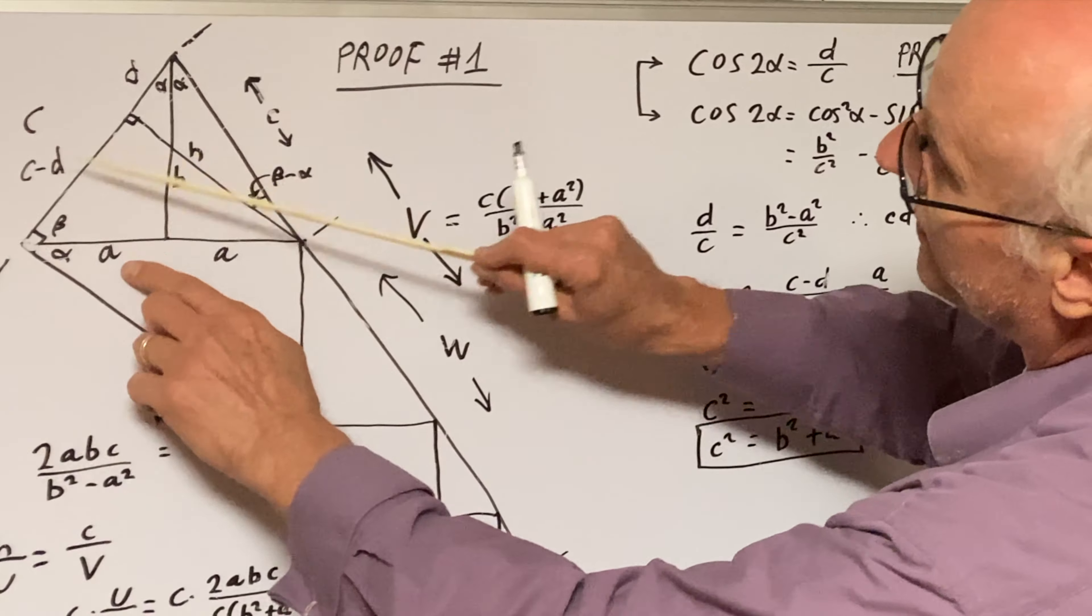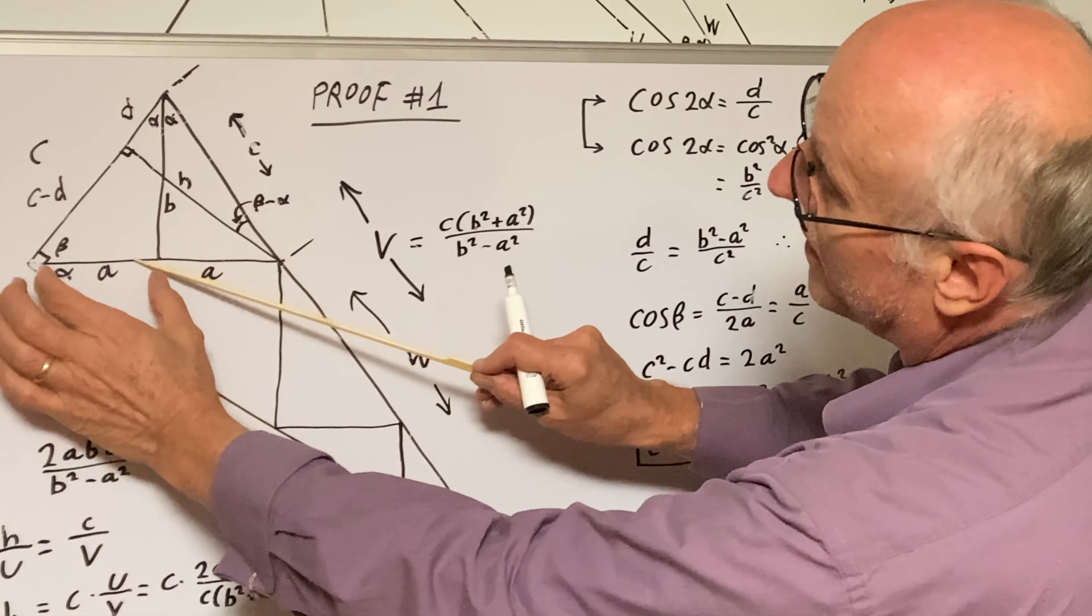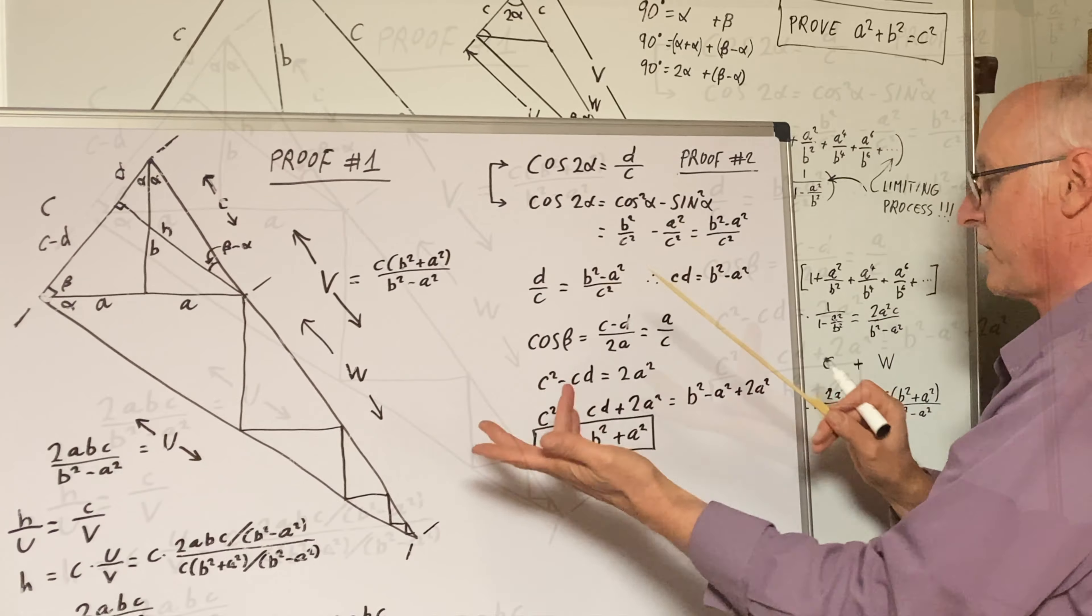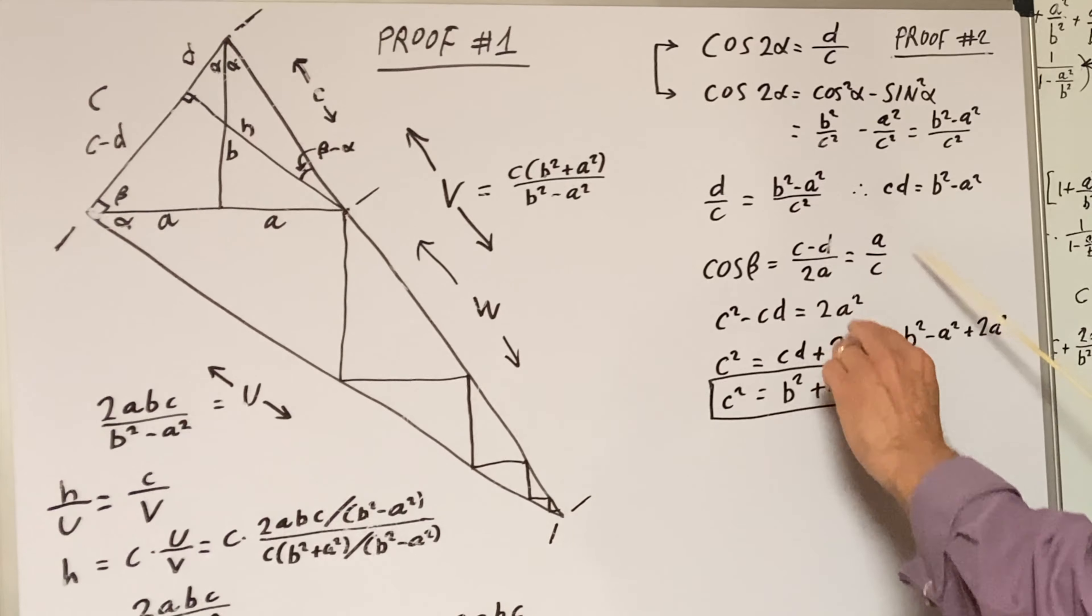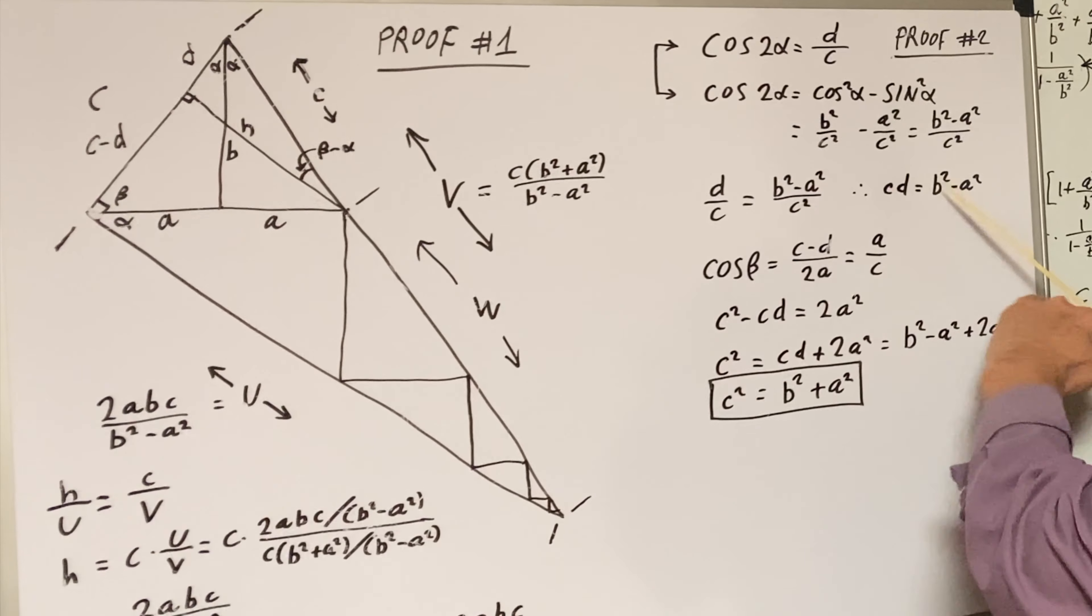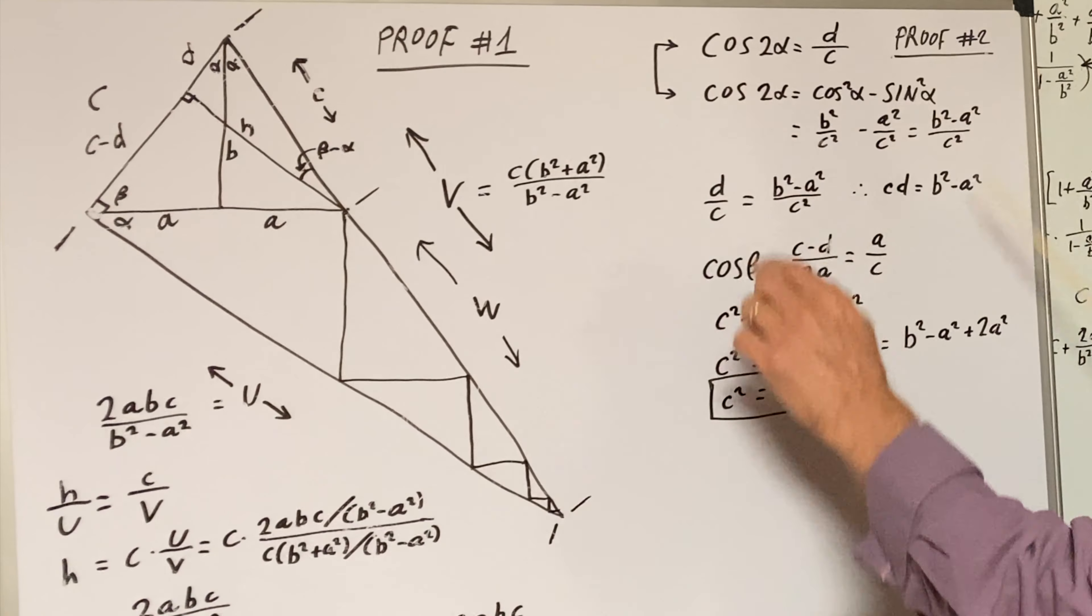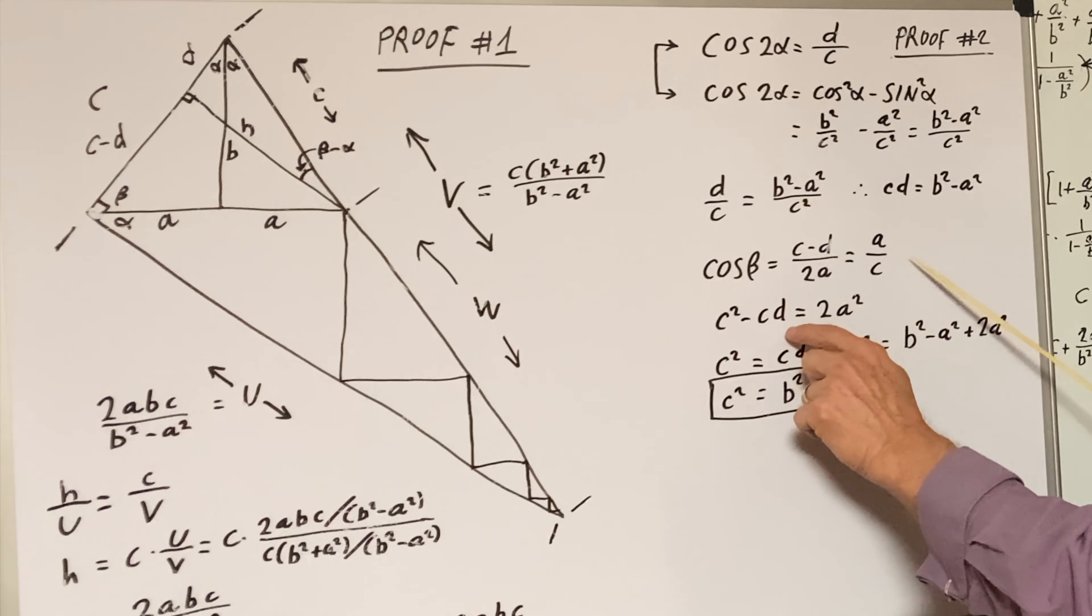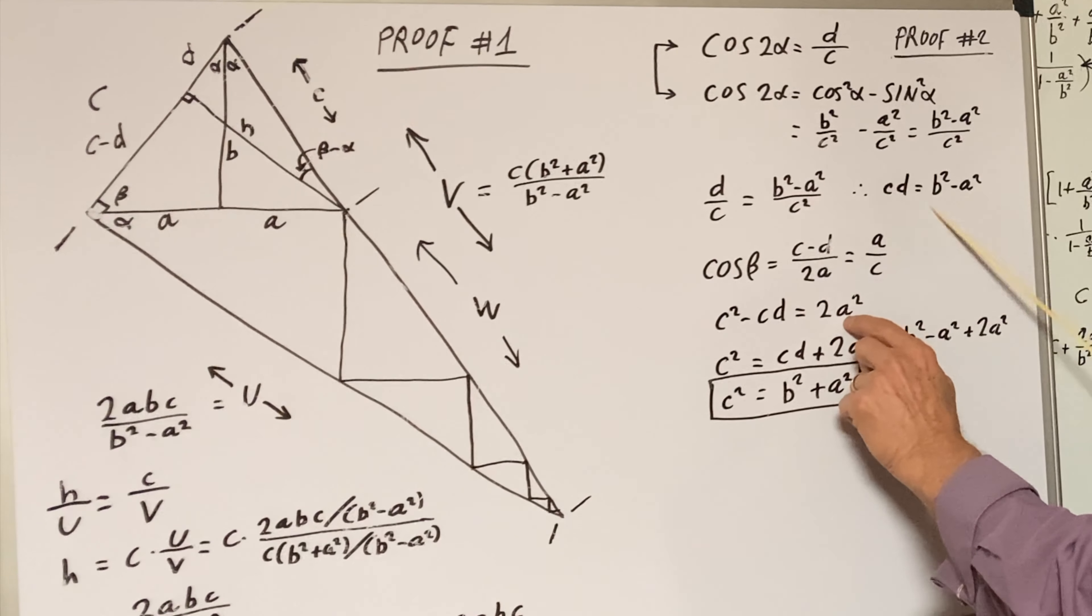But cosine of beta is also A over C. Here's beta. Here's adjacent over hypotenuse. So it's A over C. That's also the ratio. We crank through, cross multiply, and we get C squared minus CD equals 2A squared.